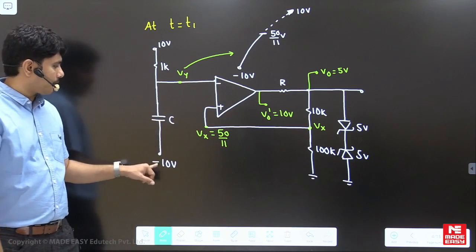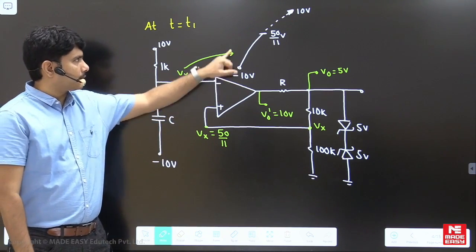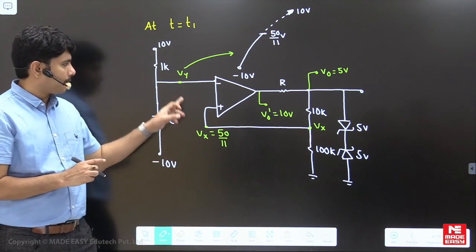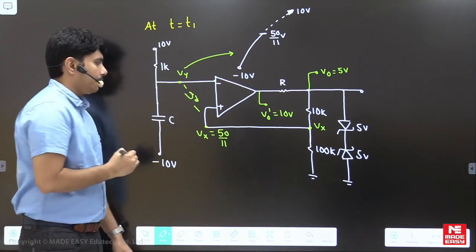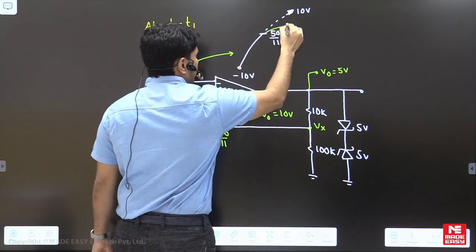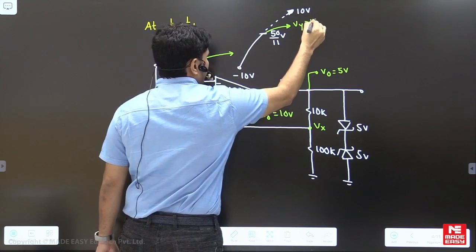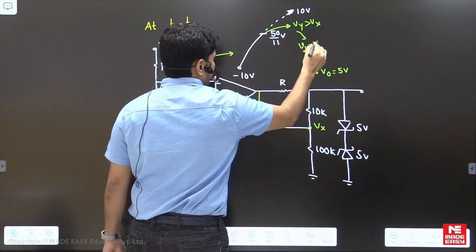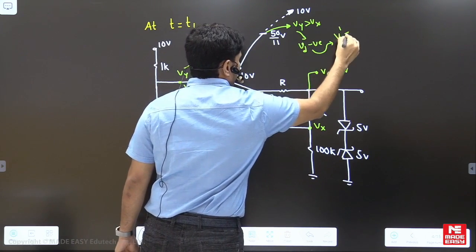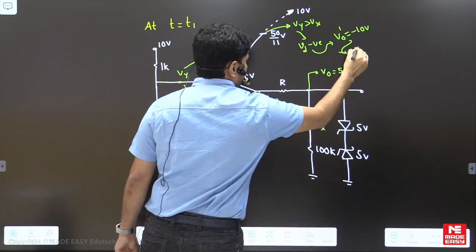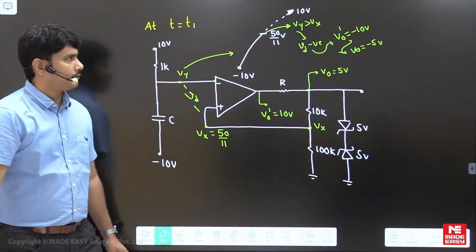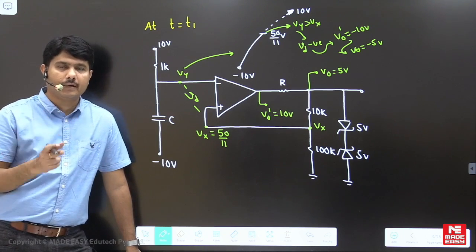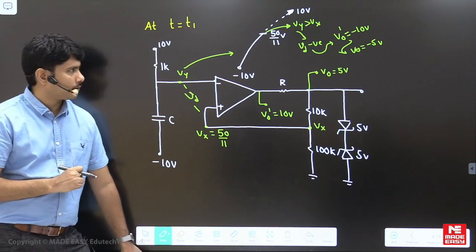The capacitor is charging from −10V toward +10V. When V_y reaches 50/11, the comparator changes state: V_d goes negative, the op-amp output switches to −10V, and the zener output switches from +5V to −5V. So the output transitions from +5V to −5V at the moment V_y = 50/11.